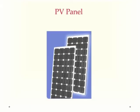PV cells are joined together electrically to form PV panels. PV panels are rated by the amount of electricity they produce when exposed to full sunlight. So a PV panel might have a 100 watt rating, or it might have a 500 watt rating, depending on its area and construction.